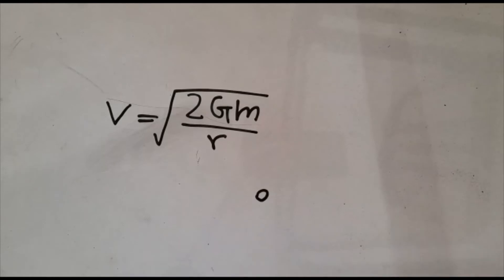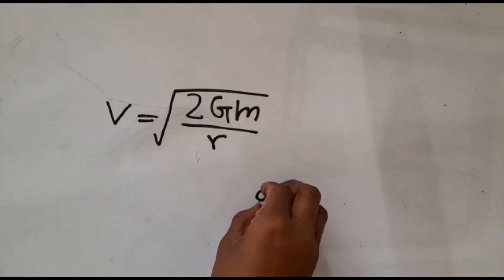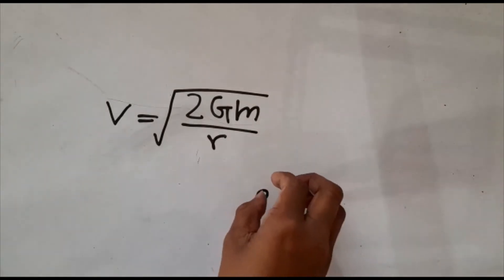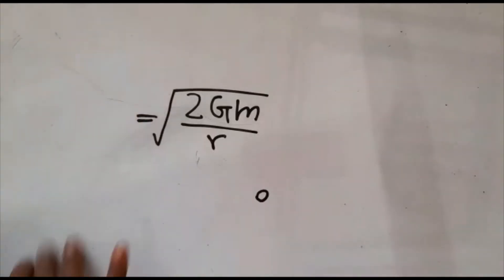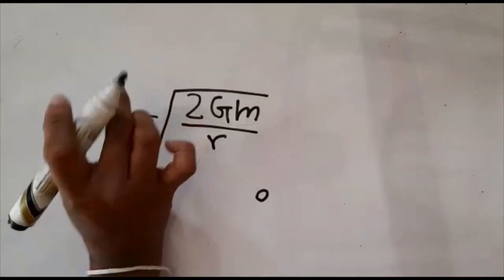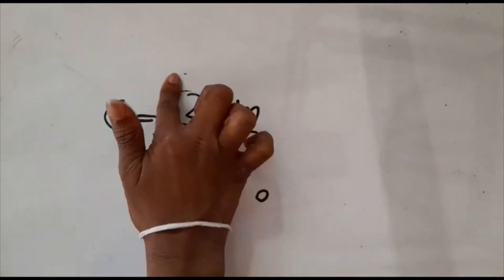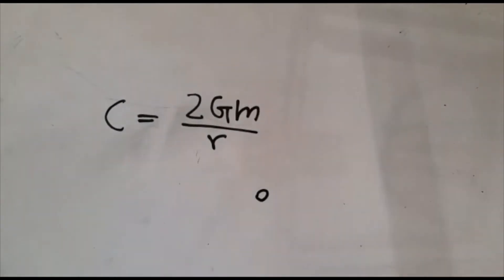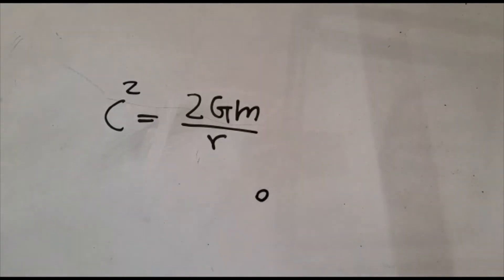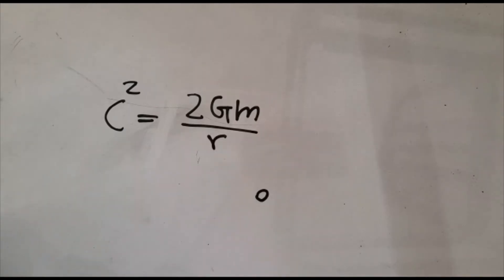Imagine you take an object and compress it until the escape velocity of that object becomes equal to the speed of light. Here, c is the international symbol for the speed of light. So we set c equal to the square root of 2GM over r. Now I'm going to square c to get rid of the square root on the right hand side, giving us 2GM over r equals c squared.